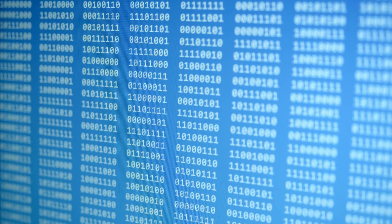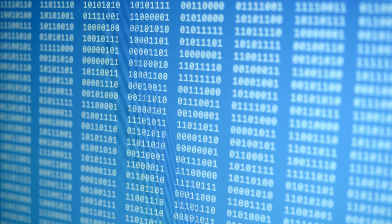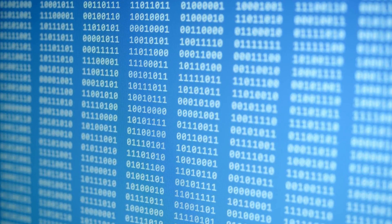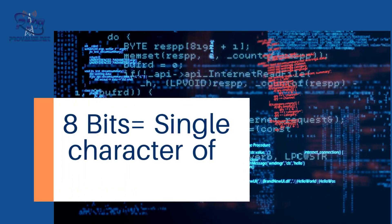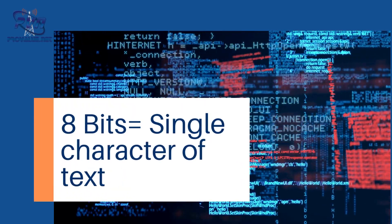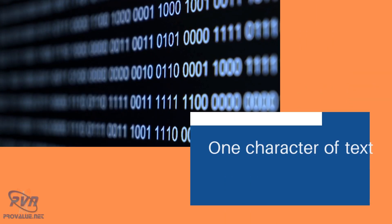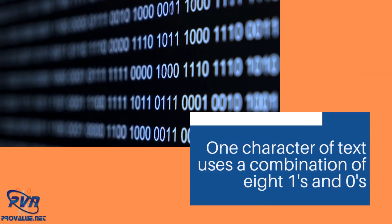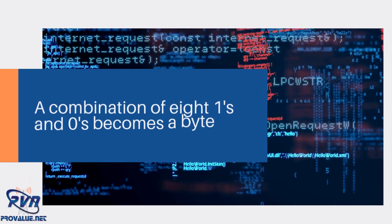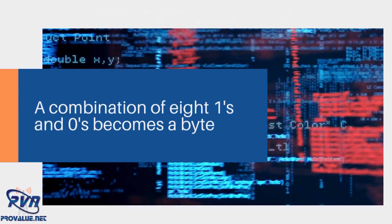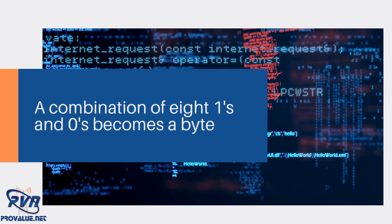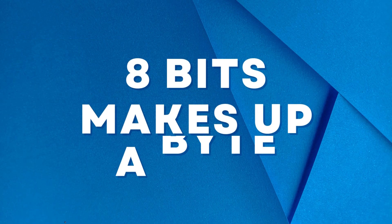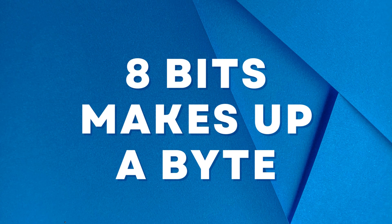So let's start at the beginning. Computers read binary numbers. Binary digits are the ones and zeros you hear about. It takes 8 bits to represent single characters of text — one character uses a combination of 8 ones and zeros. For example, the letter A is 01100001 in binary. A combination of 8 ones and zeros becomes a byte. This was purposely misspelled so it would not be confused with bit. So in other words, 8 bits makes up a byte.